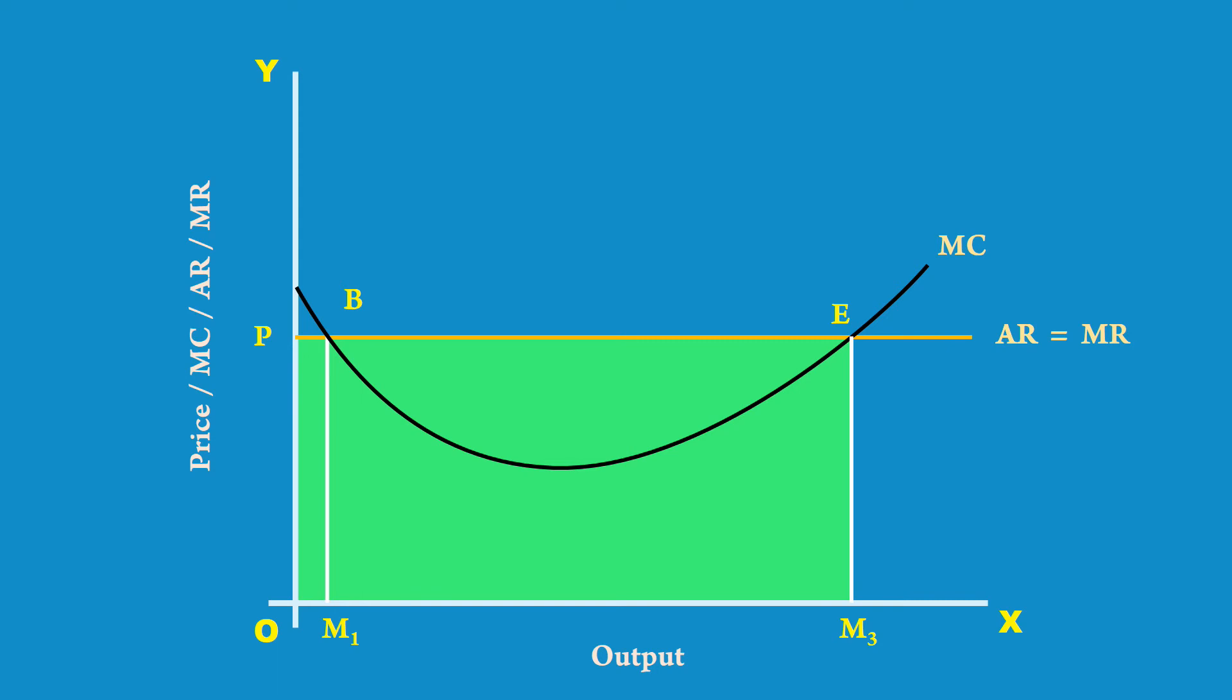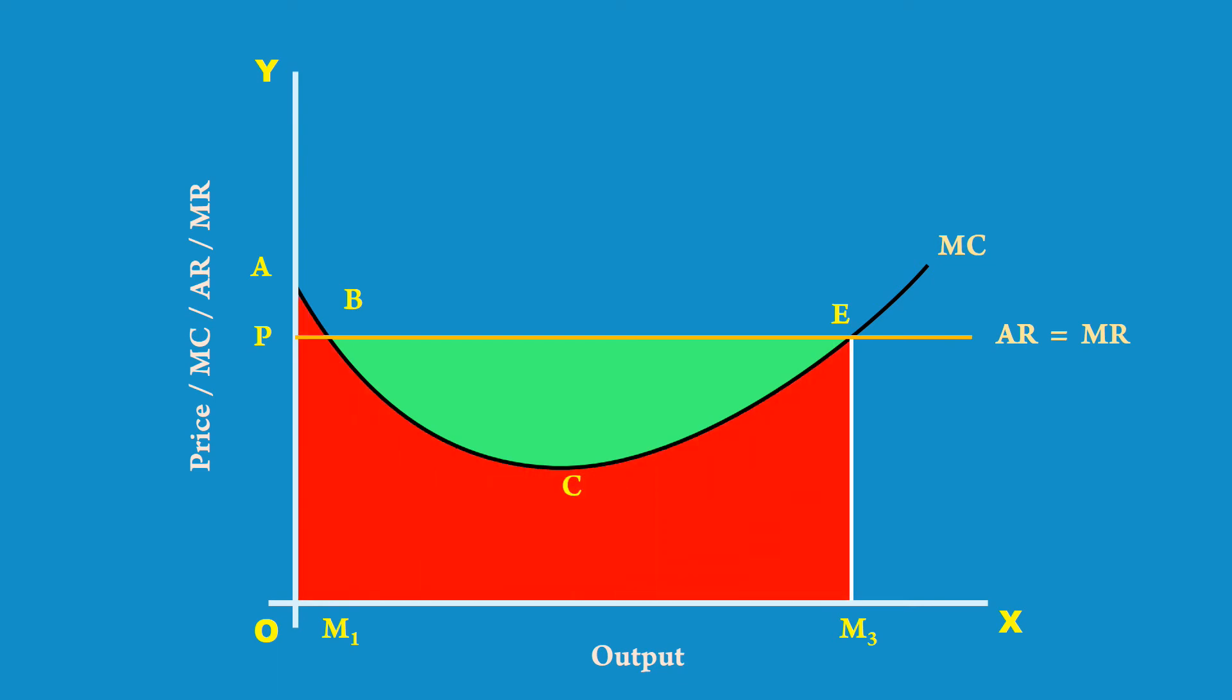The sum of each unit of marginal cost gives total cost. Area OABCEM3 represents total cost. Red shaded area shows this. The difference between total revenue and total cost is represented by the area BCE. The green colored area is profit.